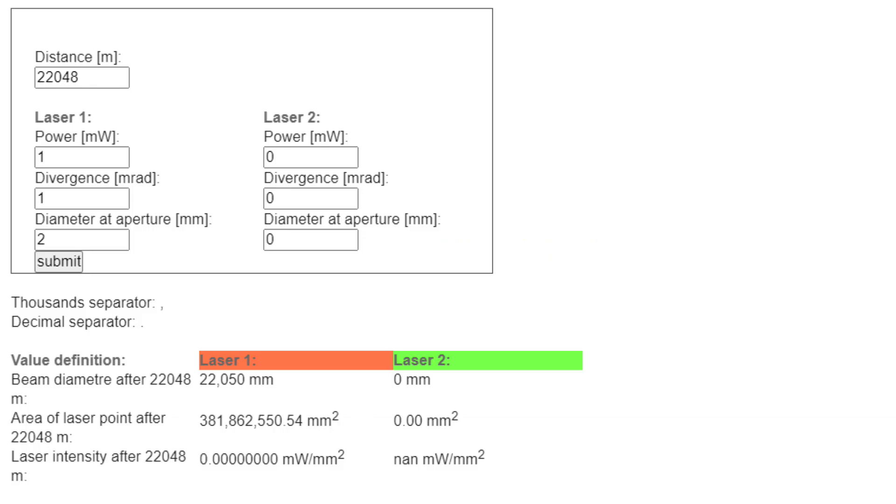So, a one milliradian laser shining at a distance of 22,048 meters or 13.7 miles, the laser beam diameter is going to be 22,050 millimeters. That's about 72 feet wide. So, let that sink in. So, what does that mean for our flat earther earlier who could see the laser from 13.7 miles away? What does that mean? Let's check it out on the earth curvature calculator.